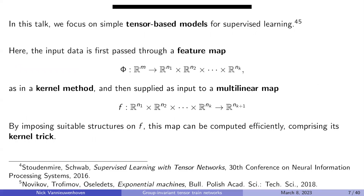What I want to talk about here is not neural networks, but very simple tensor-based machine learning models for supervised learning. The basic setup, described in a paper by Stoudenmire and Schwab, is that you take your input vectors in R^m, map them with a feature map to a collection of vectors of different lengths, and then supply these features as input to a multilinear map. This is similar to a kernel method.